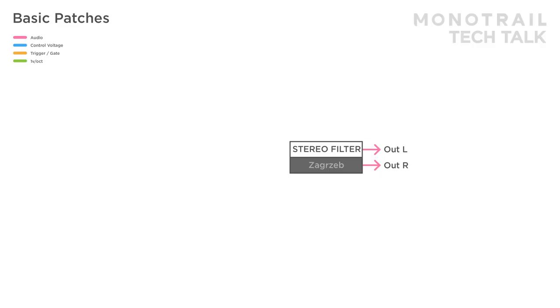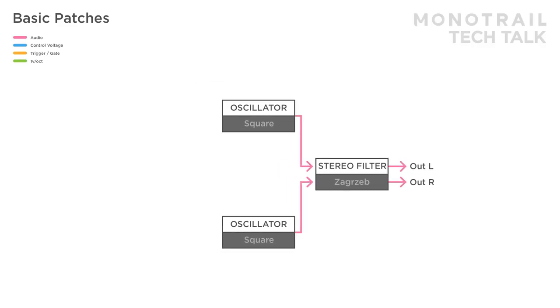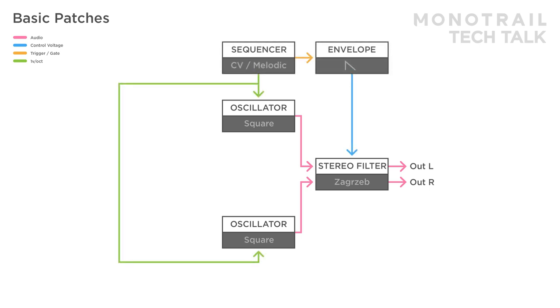Of course, if you have two oscillators to begin with, you can start the stereo sound from there. You can patch the two oscillators directly into the stereo filter and sequence them both at the same time. When you tune the oscillators to the same note but with a tiny difference in frequency, you already have a nice stereo sound.